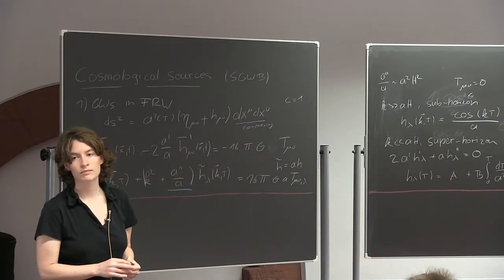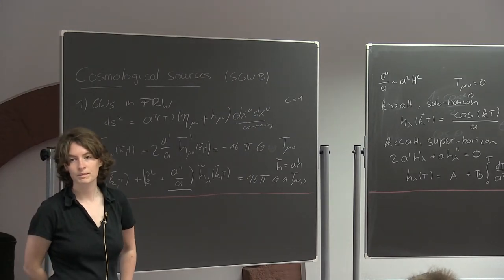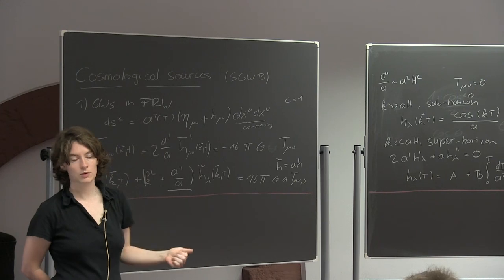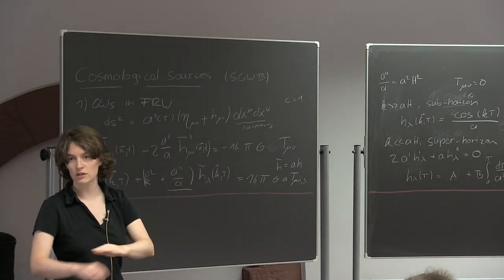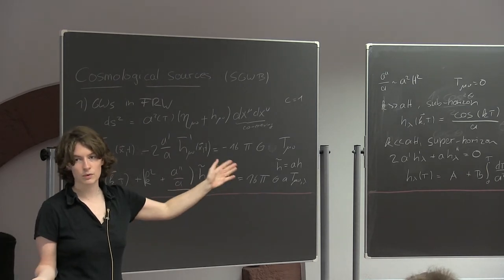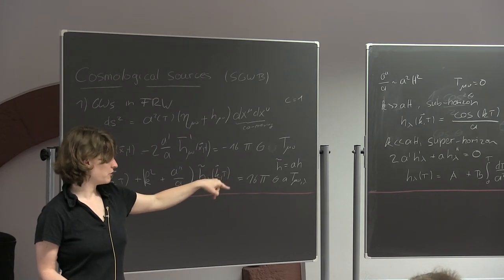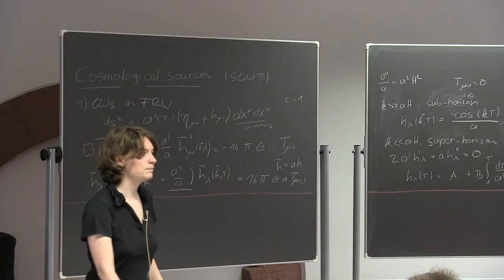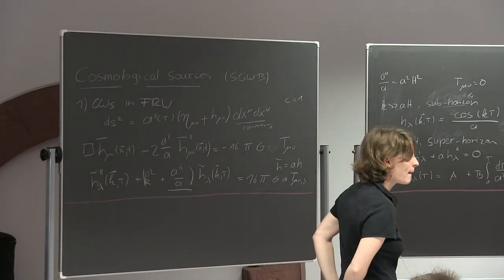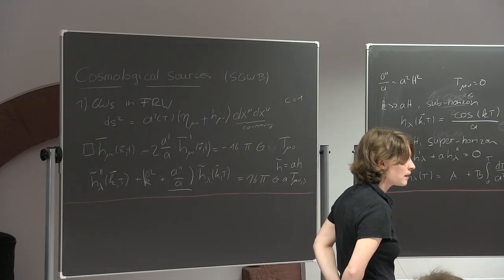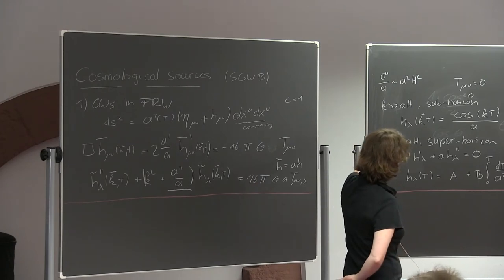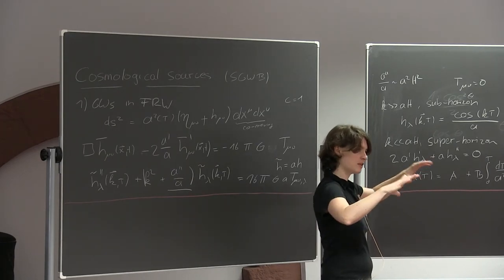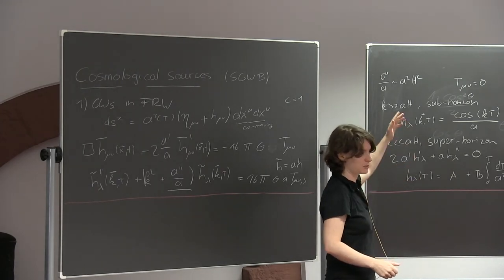Another question: does the freeze-out result assume the scale factor behaves in a specific way? The answer is only that we're in an expanding universe. Plugging in matter domination, radiation domination, or vacuum energy — all cases we think occurred — gives this behavior. But it's not true in general; a contracting universe like a bounce would not satisfy this. A further question about T_μν = 0 in the early universe: the lecturer clarifies this is just to understand propagation in FRW, treating the source and propagation effects separately.